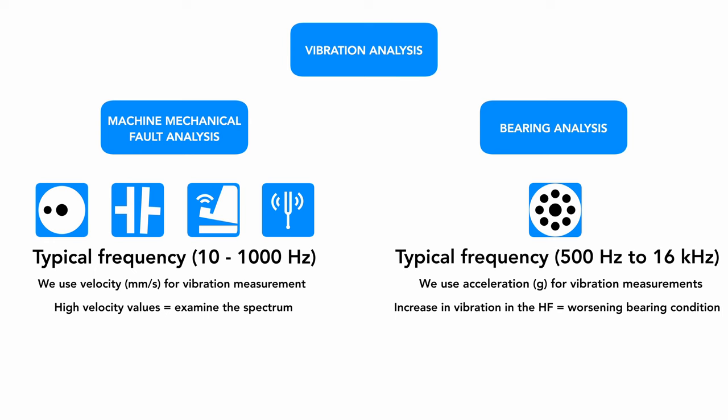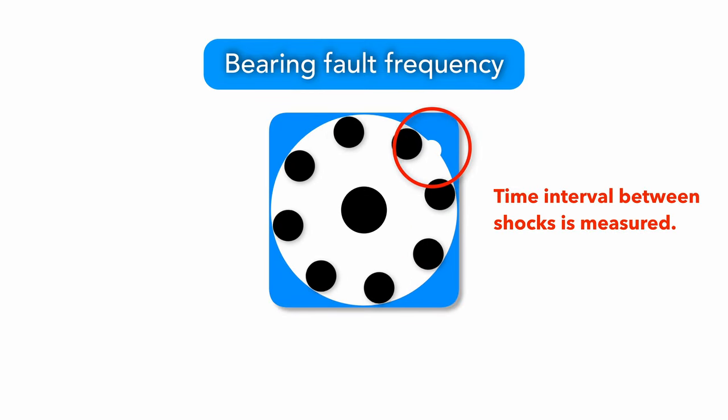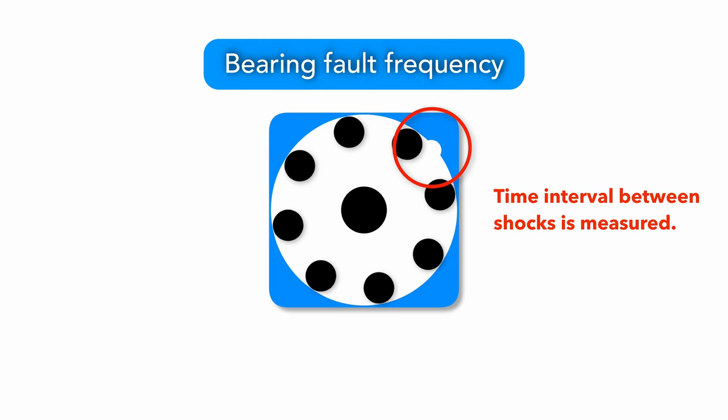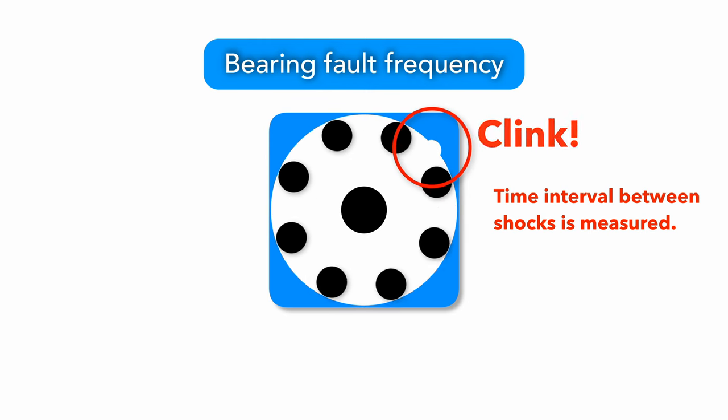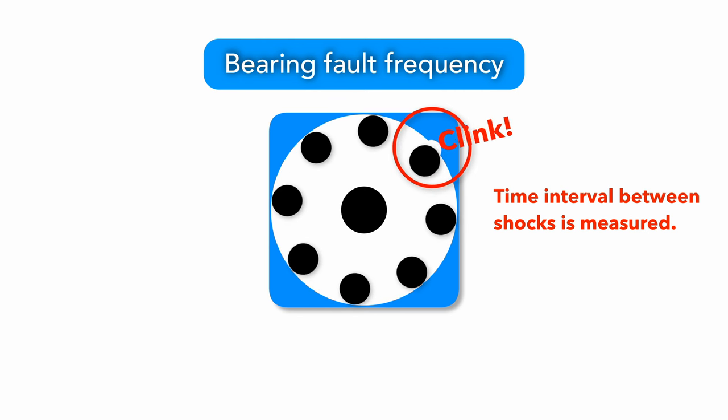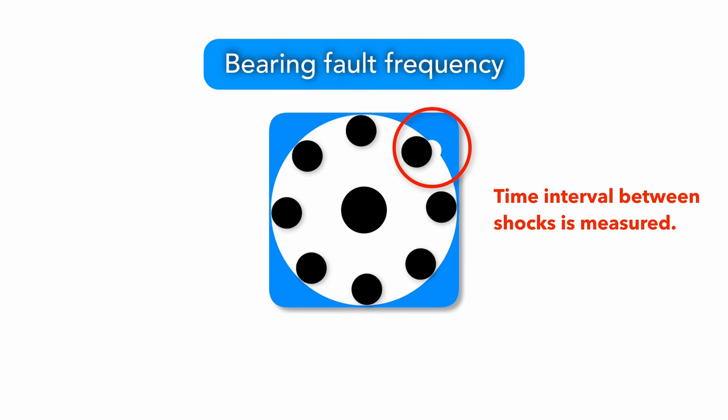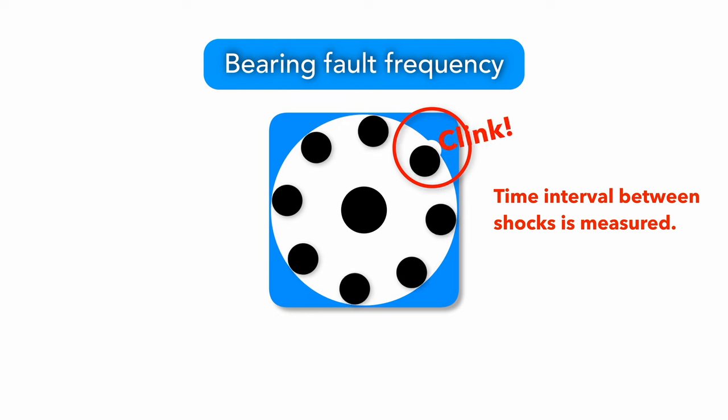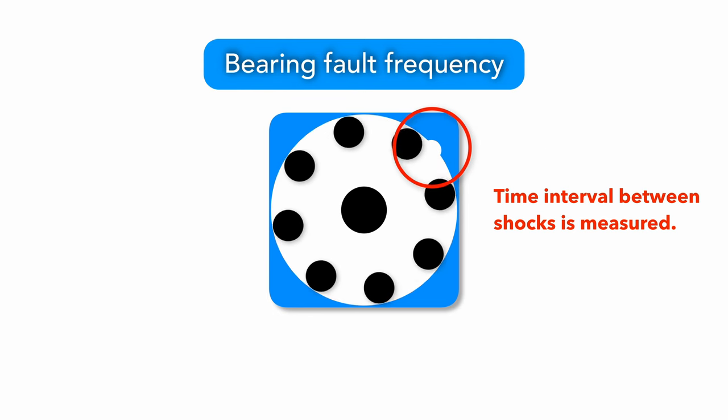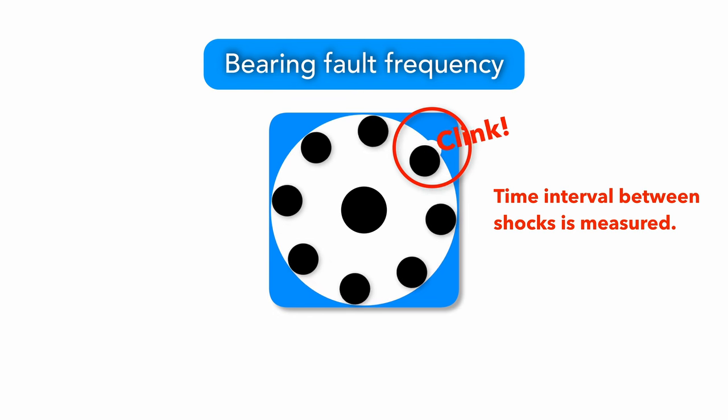Bearing analysis focuses on the fault frequencies that are specific to bearings. What is a bearing fault frequency? Imagine a pitting on the outer race. Each ball hitting the pitting causes a vibration shock, the tone. If there is a crack on the outer race, we calculate the time interval, T, between shocks based on the speed frequency and ball count. This time interval defines the repeating frequency of the shocks, the fault frequency. In this example, it's the fault frequency of the outer race.